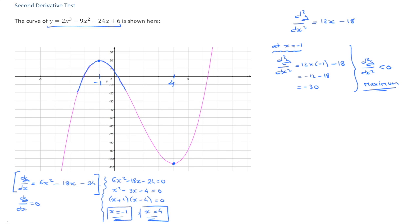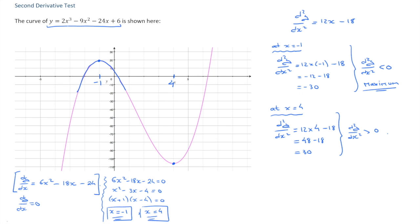Now we do the same at x equals 4, the second stationary point. At x equals 4, the second derivative equals 12 times 4 minus 18, which is 48 minus 18, equal to 30. The second derivative is positive, which means the curve is concave upwards at this stationary point. It therefore must be a minimum point.